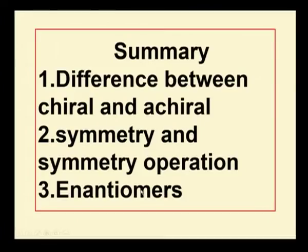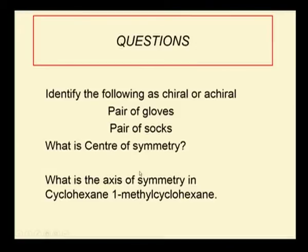In summary, we have discussed the difference between chiral and achiral, what symmetry is, what symmetry operations are, how symmetry operations play a role in determining chirality, what enantiomers are, and the significance of knowing the properties of enantiomers. Questions: identify the following as chiral or achiral — a pair of gloves, a pair of socks. Also: what is center of symmetry, and what is the axis of symmetry in cyclohexane and substituted cyclohexane (1-methylcyclohexane)?